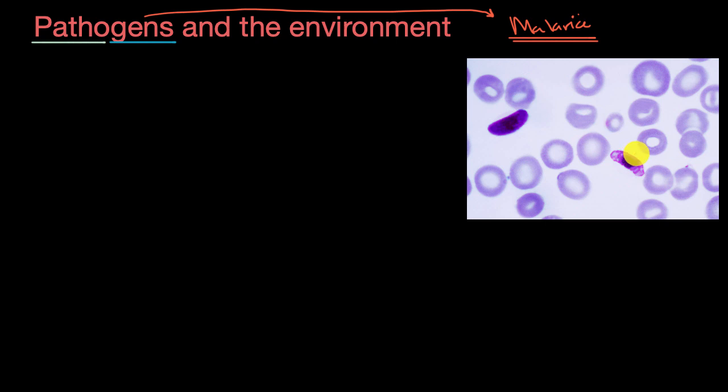So let's think a little bit about the environment in which malaria is likely to be spread. Well, there's a few things that we know. We know that the malaria pathogen can only operate, can only go through its full life cycle in relatively warm conditions.